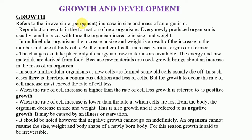Growth is permanent — once a person has grown, they have grown. However, there is a saying that when a person is old they shrink like a child, but that is not true. What happens when a person is old is what we call retardation. When cells are growing, there is an increase in number of cells, but when a person is old, cells begin to die, resulting in a decrease in number of cells.